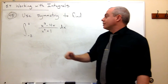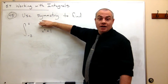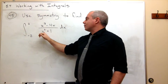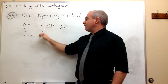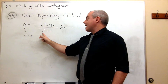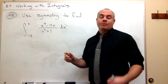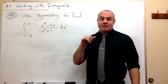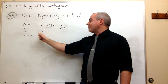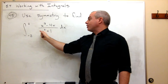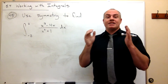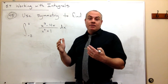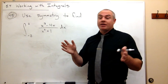Now, the bottom of this thing is an even function. If x is positive, I get a positive number. If x is negative, I also get a positive number — in fact, exactly the same value. For example, if I plug in 1, I get 2; if I plug in negative 1, I also get 2. So it's an even function — positive or negative x gives the same result.